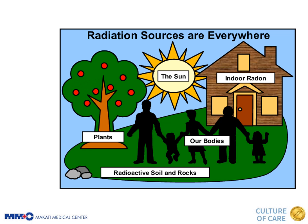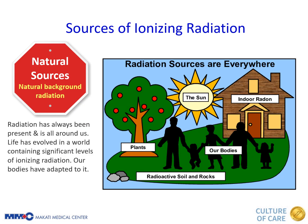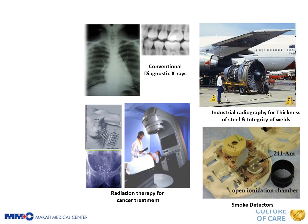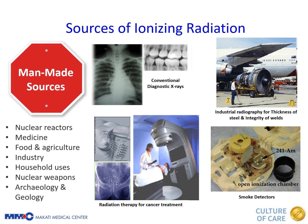Now let's talk about the natural sources of radiation on our planet. Radiation sources are everywhere — from the sun, from plants, from the food we eat, and from the ground — and we are exposed on a daily basis. If there are natural sources, we also have what we call man-made or artificial sources of radiation, such as conventional diagnostic x-rays, industrial radiography, radiation therapy for cancer treatment, and smoke detectors. Different uses of man-made radiation sources include nuclear reactors, medicine, food and agriculture, industry, household uses, nuclear weapons, archaeology, and geology.